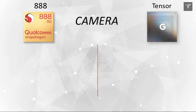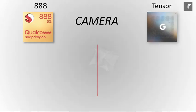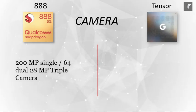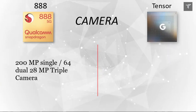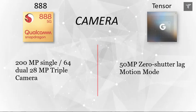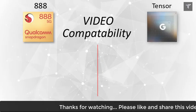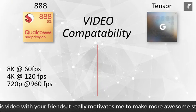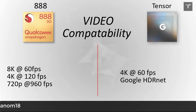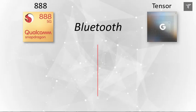The maximum camera resolution matters less with the Tensor due to its advanced image processing. The Snapdragon 888 supports up to 200 megapixels on a single camera and 64 megapixels on dual cameras, whereas the Tensor supports up to 50 megapixels with zero shutter lag and motion mode — custom-made for the Google Pixel 6 series. For video, the Snapdragon 888 supports up to 8K at 60 fps, while the Tensor is capable of up to 4K at 30 fps.